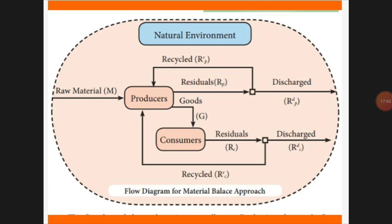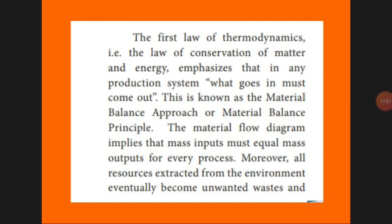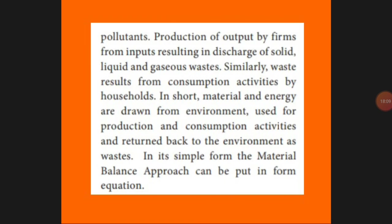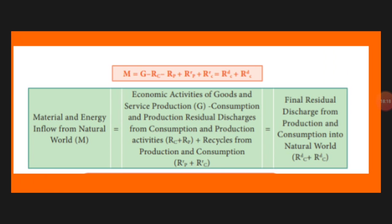This can be explained using a formula. G represents goods and services production. Rc is the residual discharge of consumption — the wastage from household use. Rp is the wastage from production or industry manufacturing. Rr represents what is recycled — the waste product that can be recycled and reused. So only the final output comes as waste and goes back to the environment.